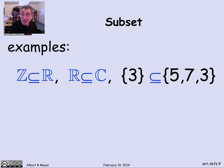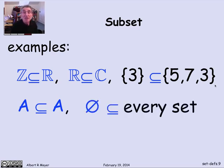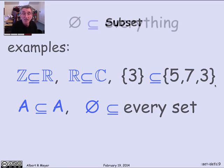In this case, 3 is not a subset of this set on the right, but the set consisting of 3 is a subset of the set on the right, because after all, the only member of this set is 3, and that is a member of this set. A consequence of this general definition is that every set is a subset of itself, because everything in A is in A. Another important general observation is that the empty set is a subset of everything. The empty set is a subset of every set.